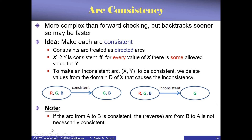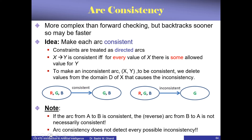Note that if the arc from A to B is consistent, the reverse from B to A is not necessarily consistent — it depends on the problem. Also, arc consistency, even though it is very good, still doesn't detect every possible inconsistency.